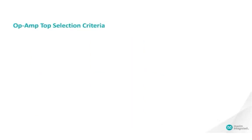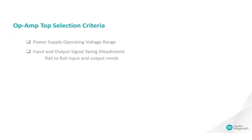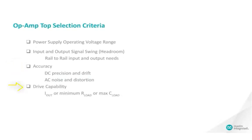When selecting an op-amp for an application, the most important criteria to consider are: What is the power supply operating voltage range? What maximum input and output signal swing is required? How much accuracy does the application require? What kind of load will the circuit drive? How fast does the input signal vary? And how much power consumption is allowed?